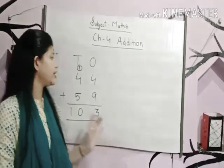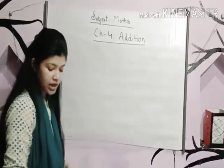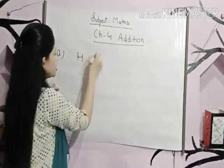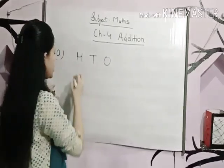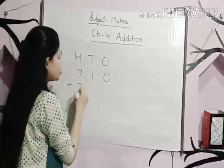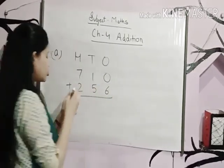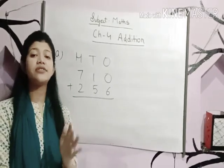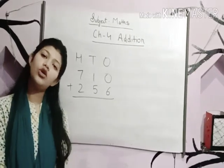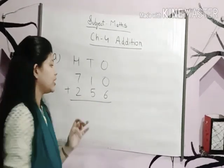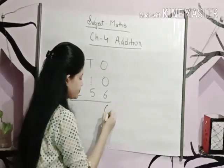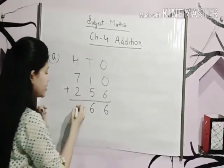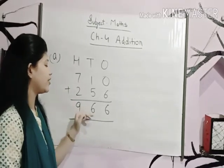Now let's learn 3-digit addition. Page number 50, Quick Assessment. A part — HTO columns. The numbers given are 710 plus 256. We will add the 1s column: 0 plus 6 is equal to 6. Then the 10s column: 1 plus 5 is equal to 6. Then the 100s column: 7 plus 2 is equal to 9. The answer we got is 966.